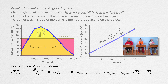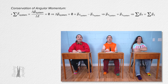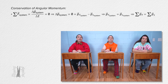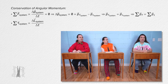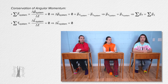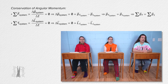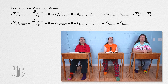Bo, please do the same only for angular momentum. The net torque on a system equals the change in angular momentum of a system divided by change in time. If the net torque on a system equals zero, then the change in angular momentum of the system equals zero. The change in angular momentum equals final minus initial angular momentum, so the final angular momentum of the system equals the initial angular momentum. Another way to say that is the sum of the final angular momenta equals the sum of the initial angular momenta.